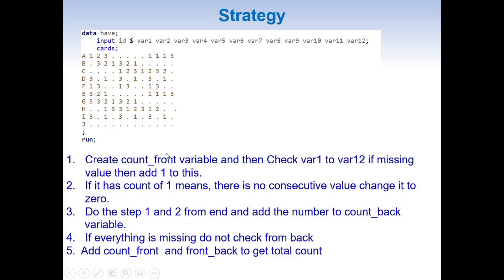We then do the same thing from the back: we create a variable count_back and check from the end. If there is a missing value we add one; if there is a non-missing value we stop. In the case of ID J where everything is missing, we only check from the beginning and do not check from the end. Finally, we add count_front and count_back into a new variable total_count to get our result.